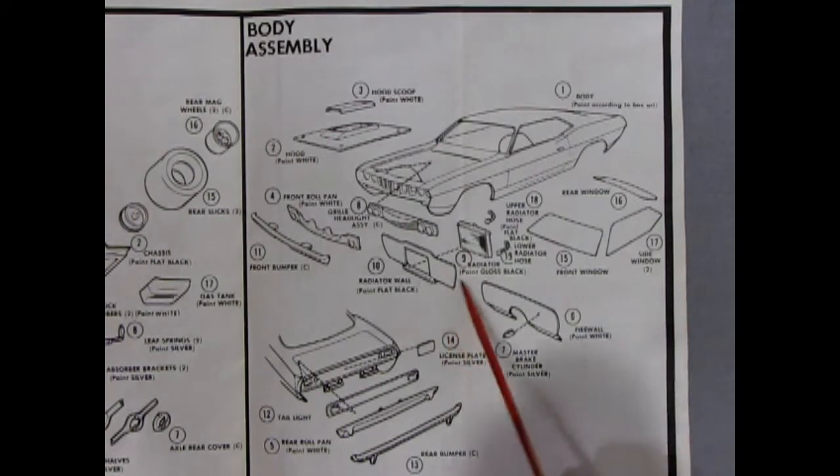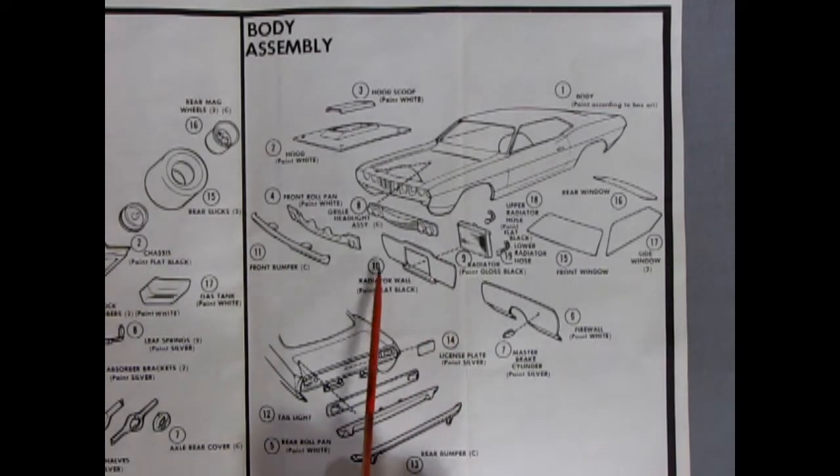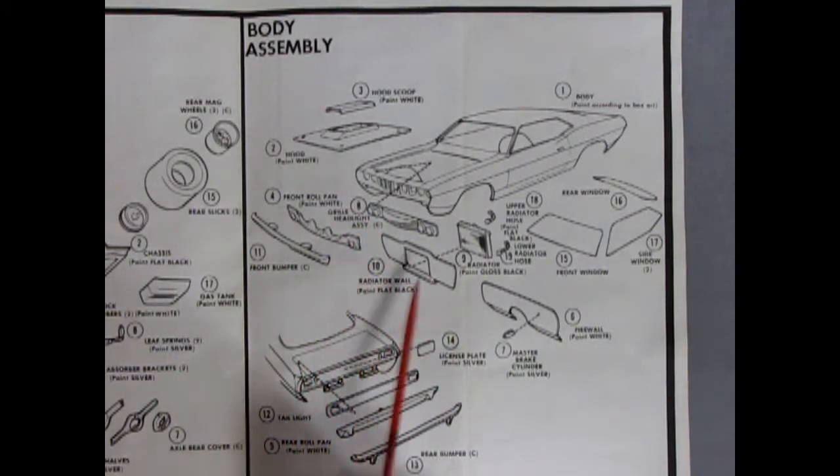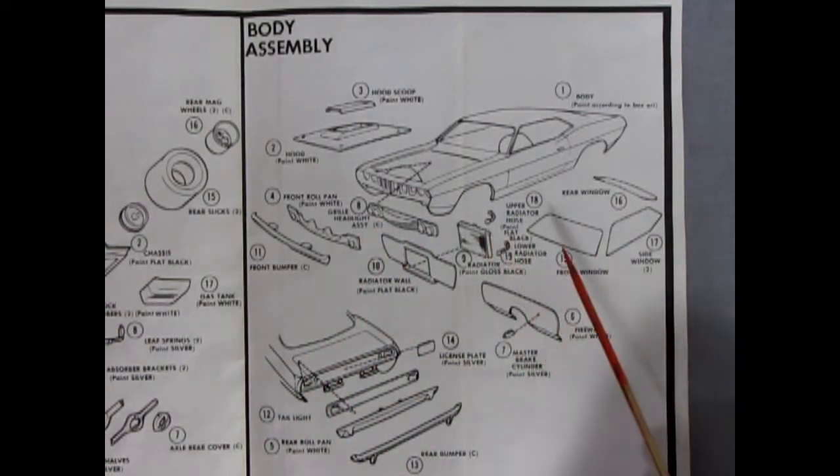Now, remember, it says paint flat black. That's only on this side. On the other side would be the body color. They painted this black so that if you look through the grills, you would not see white paint or body color paint, but you would actually black out. It would disappear.